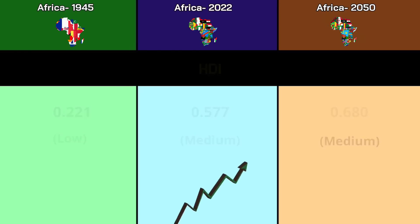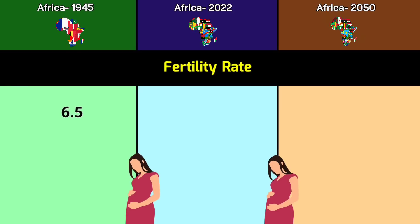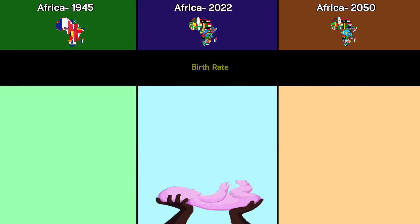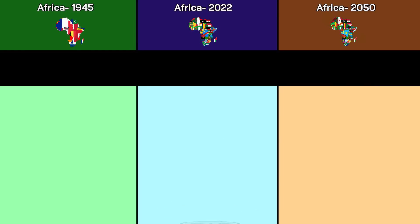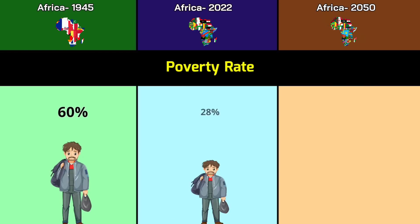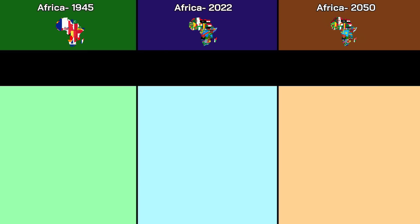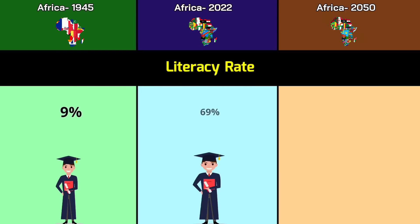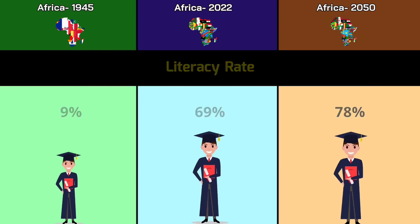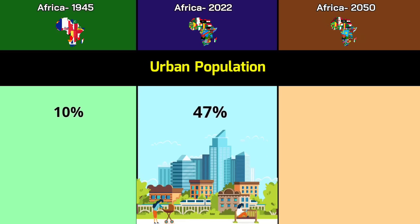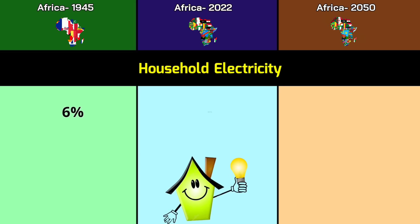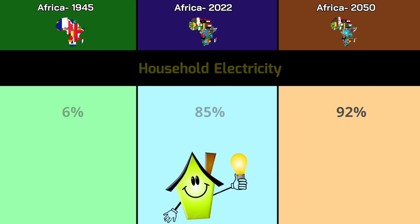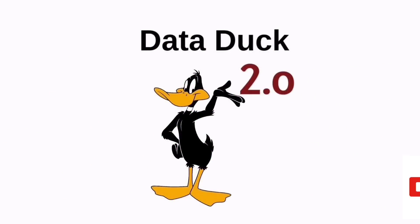Fertility rate: 6.5 in 1945; 4.2 in 2022; 3.7 in 2050. Birth rate: 48, 32, and 26. Death rate: 30, 12, and 10.5. Poverty rate: 60% in 1945; 28% in 2022; 20% in 2050. Literacy rate: 9% in 1945; 69% in 2022; 78% in 2050. Urban population: 10% in 1945; 47% in 2022; 54% in 2050. Household electricity access: 6% in 1945; 85% in 2022; 92% in 2050.